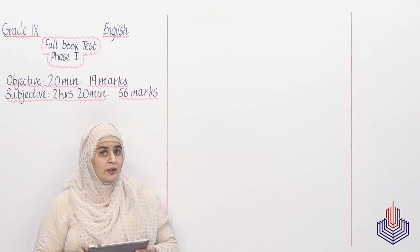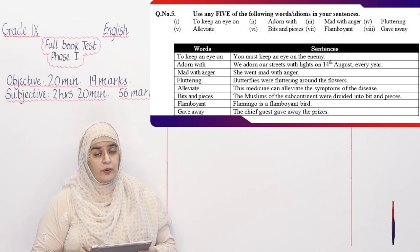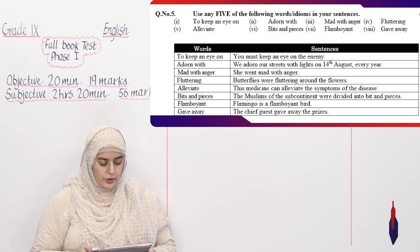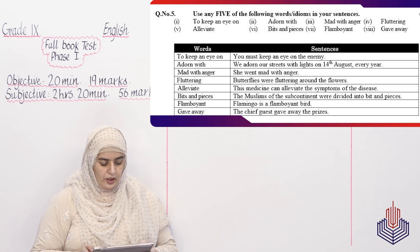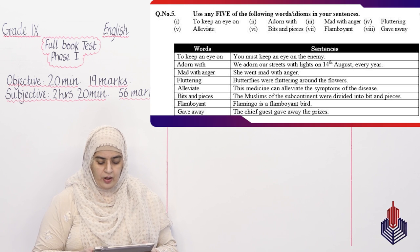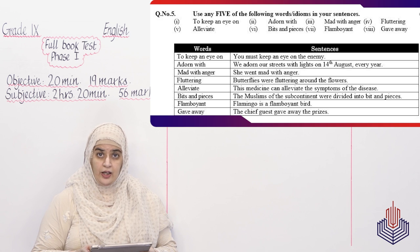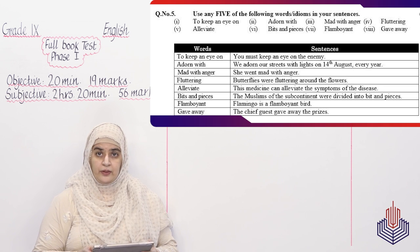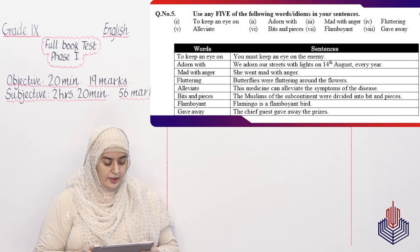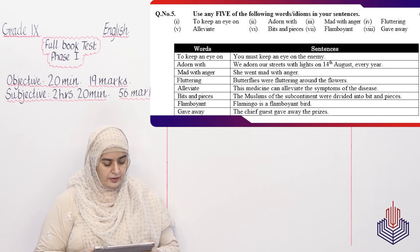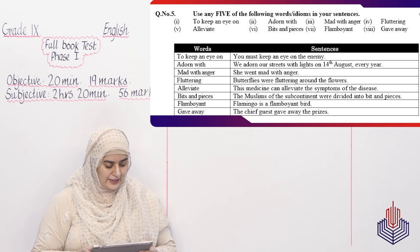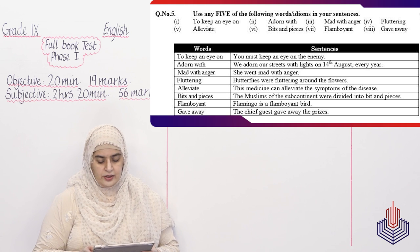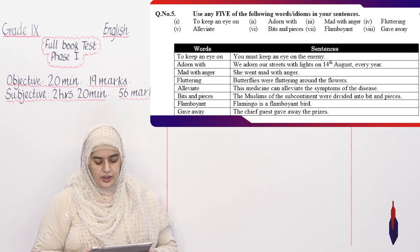Let's move on to question number 5. Question number 5 is asking you to construct 5 sentences from any of the given 8 words. And these marks are also 5. The word bank of today's paper is: to keep an eye on, adorn with, mad with anger, fluttering, alleviate, bits and pieces, flamboyant or giveaway. To keep an eye: You must keep an eye on the enemy. Adorn with: We adorn our streets with lights on 14th August every year. Mad with anger: She went mad with anger as she saw someone has touched her things. Fluttering: Butterflies were fluttering around the flowers. Alleviate: This medicine can alleviate the symptoms of the disease. Bits and pieces: The Muslims of the subcontinent were divided into bits and pieces. Flamboyant: Flamingo is a flamboyant bird. Giveaway: The chief guest gave away the prizes.